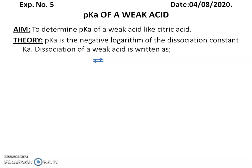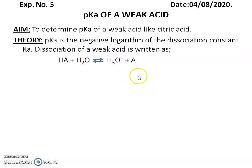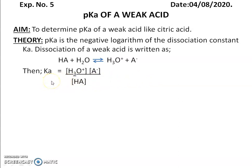First, determination of pKa of weak acid — that is citric acid. Coming to the theory part: pKa means the negative logarithm of the dissociation constant Ka. Weak acids will dissociate as HA in the presence of water into H3O (hydronium ion) and A⁻. Weak acids are not completely dissociated, so there is an equilibrium. As per the law of mass action, Ka equals the concentration of hydronium ion times the concentration of A⁻, divided by the concentration of the acid.